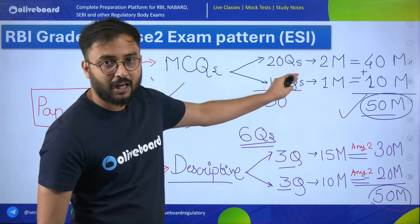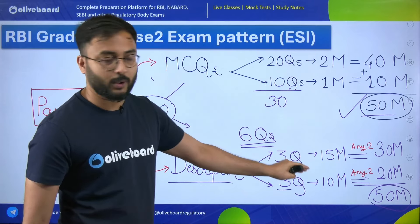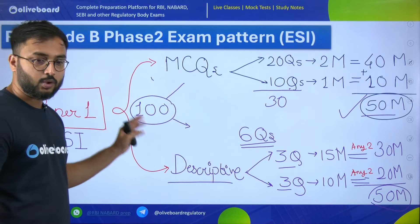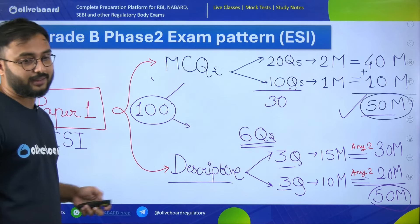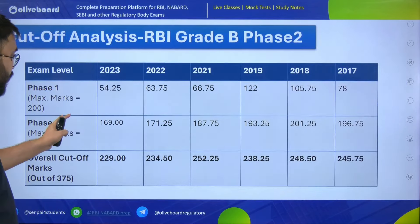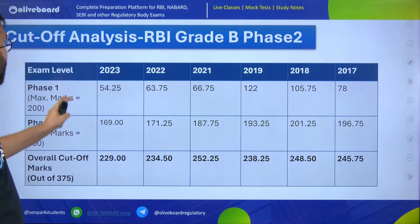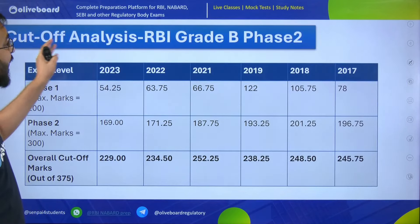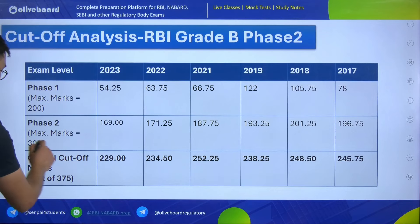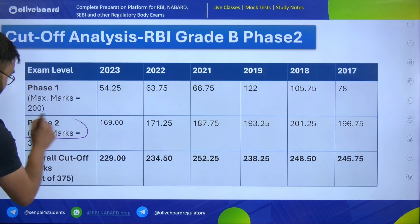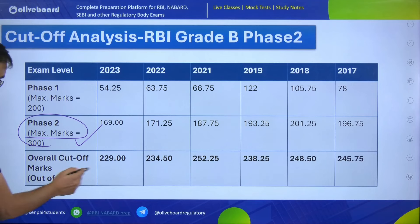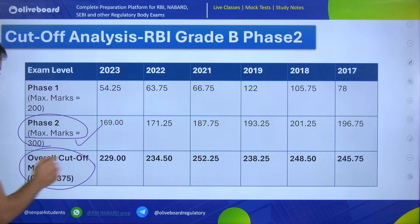So 50 marks objective, 50 marks descriptive — in total your 100 marks. Now let us discuss how we can strategize. These are the cutoffs for your overall RBI grade B phase 2 examination. These are the cutoffs for only phase 2 exam, and this is the overall cutoff.